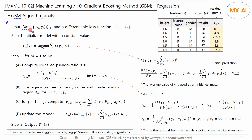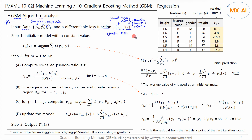We have data like this — X is the feature and Y is the target value, and there are a total of N data points. The loss function we will use is expressed such that Y is the actual target value and F is the predicted target value. This algorithm can be applied to both regression and classification. In regression, the mean squared error can be used as a loss function, and in classification, cross entropy can be used. Here we will look at the regression algorithm using the mean squared error loss function.